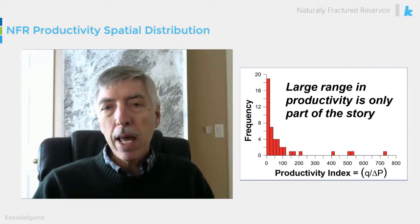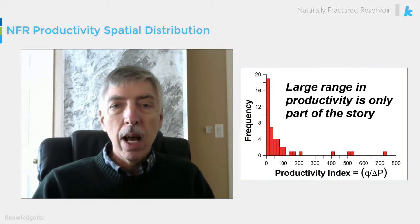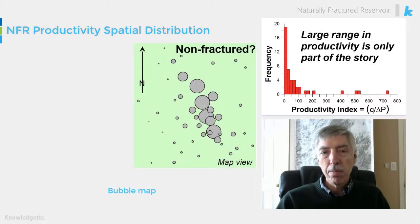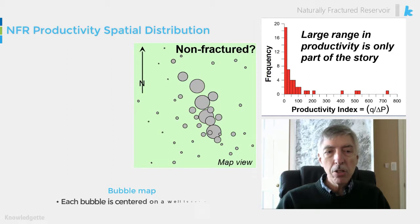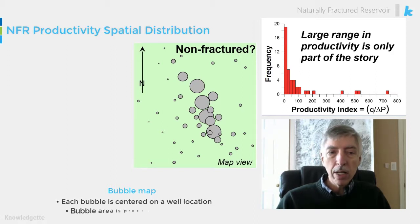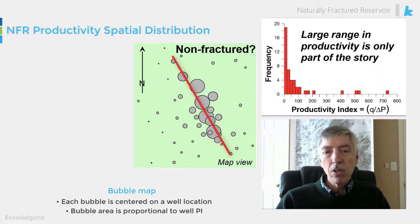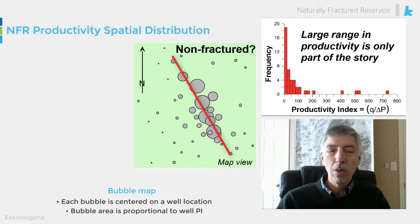If I were to look at a map with this PI data plotted at the location of wells, I might generate a map that looks something like this. It's a bubble map here. What you're seeing is each bubble is centered on a well location and the bubble area is proportional to the well productivity index. What we see is a line of high-performing wells near the center that has a trend from northwest to southeast.